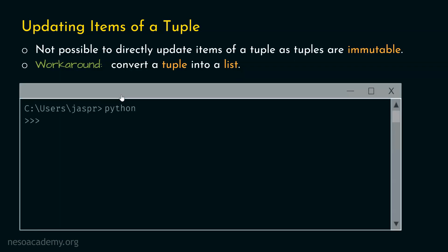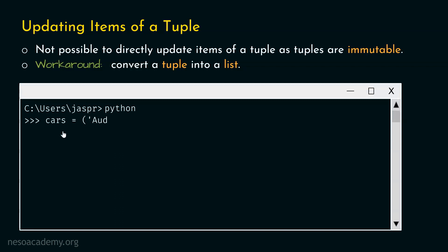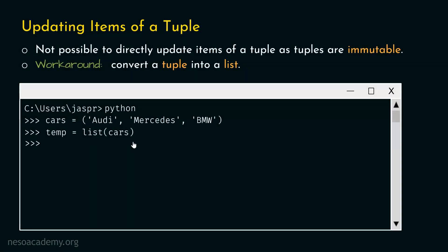Let's open our command prompt and consider the same cars example. We will convert this tuple into a list: temp = list(cars). Let's hit enter. Now let's say we want to update Mercedes to Toyota, meaning we want to replace Mercedes by Toyota. We will first do that in our list temp. We can access this item using its index, which is 1.